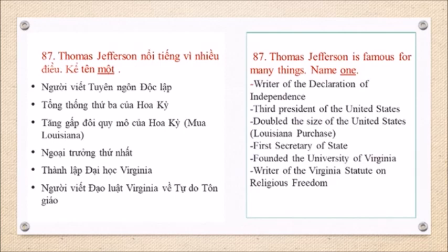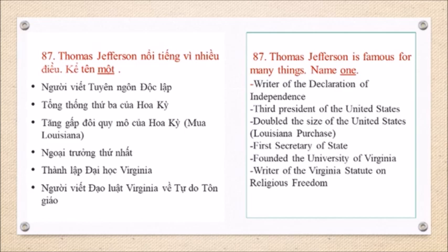Question 87: Thomas Jefferson is famous for many things. Name one. Writer of the Declaration of Independence. Third President of the United States. Doubled the size of the United States — Louisiana Purchase. First Secretary of State. Founded the University of Virginia. Writer of the Virginia Statute on Religious Freedom.